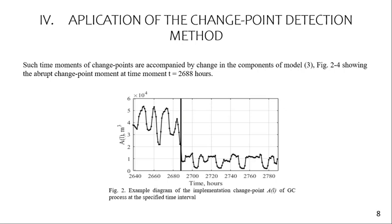Application of our change point detection method is shown on the next slide. These time components of change point detection are accompanied by changes in the components of model expression 3, shown on figures 2, 3, and 4. The abrupt change point moment occurs at time t = 2, 6, 8 hours.